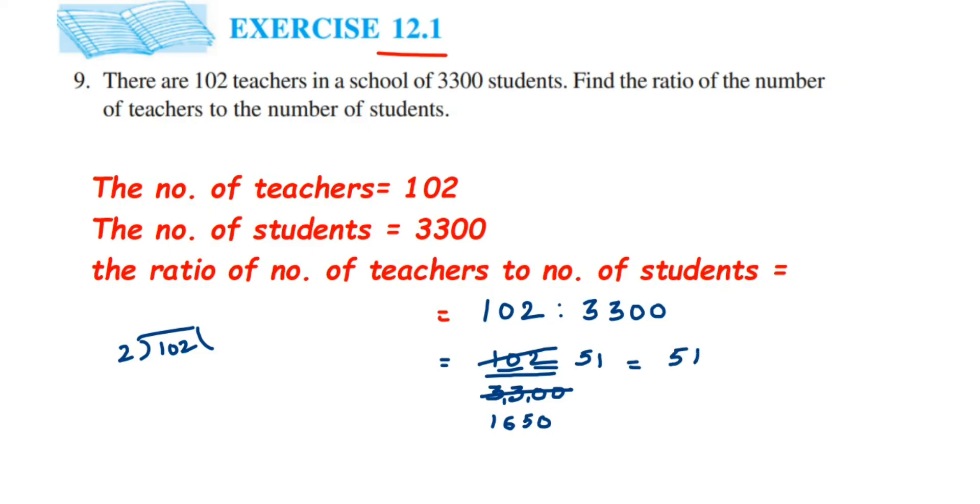We got 51 by 1650. Now they are odd numbers. So we cannot cancel this in two tables. Now let's try this with three tables because the number goes in three tables. Both numbers are divisible by 3. I'm going to cancel this in three tables.